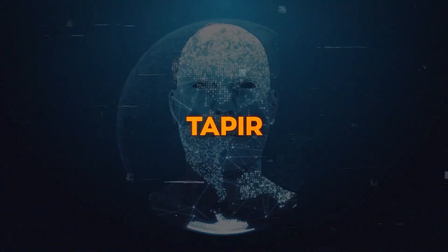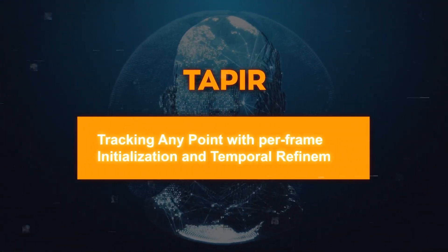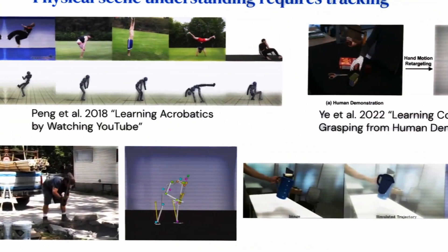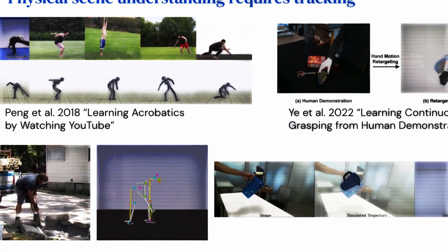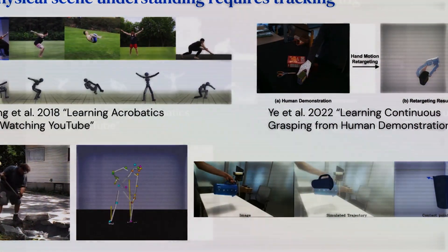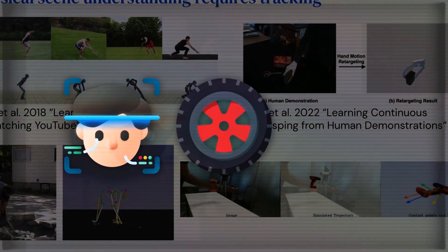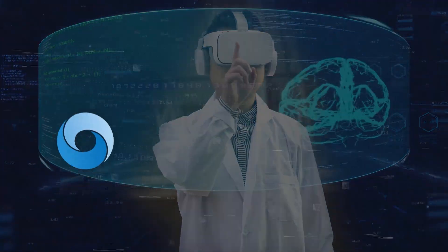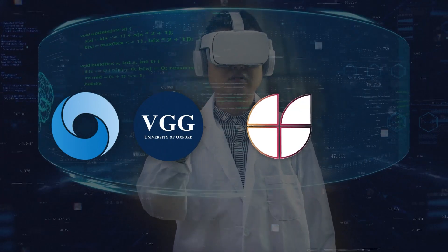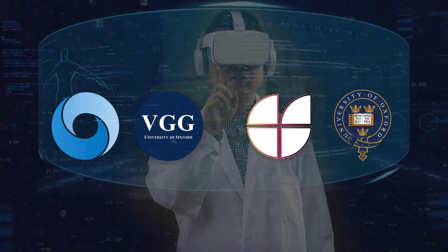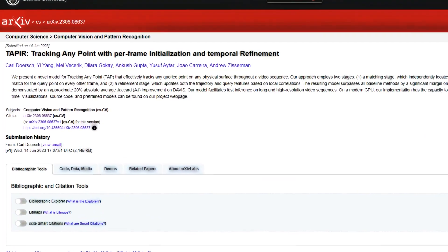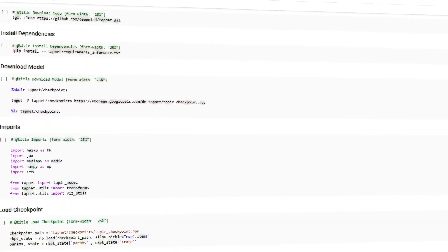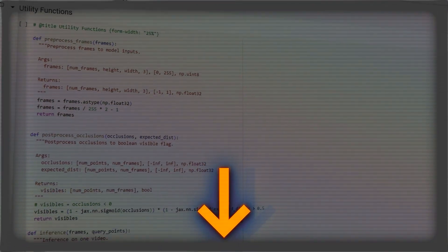This is where TAPER comes into the picture. TAPER stands for Tracking Any Point with per-frame initialization and temporal refinement. It's a new model that can effectively track any point on any physical surface throughout a video sequence — whether the point is on a person's face, a car's wheel, a bird's wing, or anything else. It was developed by a team of researchers from Google DeepMind, VGG, the Department of Engineering Science, and the University of Oxford. They published their paper on ARXIV on June 14, 2023, and also open-sourced their code and pre-trained models on GitHub.